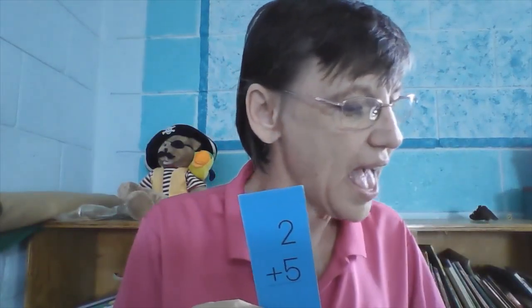What do we have next? I see a 5 and a 2 — 1, 2, 3, 4, 5, 6, 7 — like our fingers. So we have 5 plus 2 is 7. 2 plus 5 is 7. 7 take away 5 is 2. And 7 take away 2 is 5.